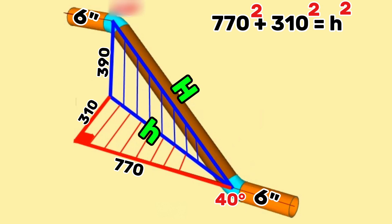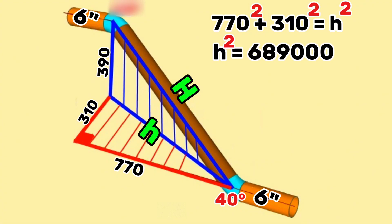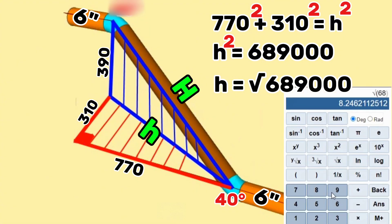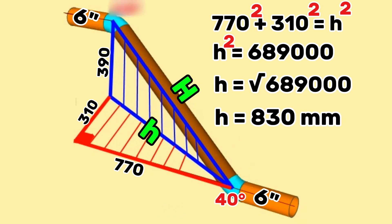Continuing to calculate, small h squared equals 689,000. Therefore, small h equals the square root of 689,000. Using a scientific calculator, small h equals 830 millimeters. This 830 millimeters is the hypotenuse of the horizontal red color right angle triangle, and is also one of the perpendicular sides of the vertical blue right angle triangle.